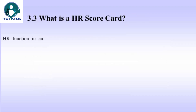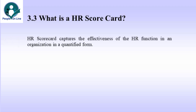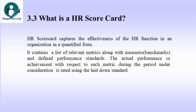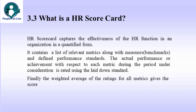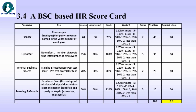The HR scorecard captures the effectiveness of the HR function in an organization in a quantified form. It contains a list of relevant metrics along with measures — the benchmarks or targets — and defined performance standards. The actual performance or achievement with respect to each metric during the period under consideration is rated using the laid down performance standard, which serves as a scoring logic. Finally, the weighted average of the ratings for all metrics gives the overall score.